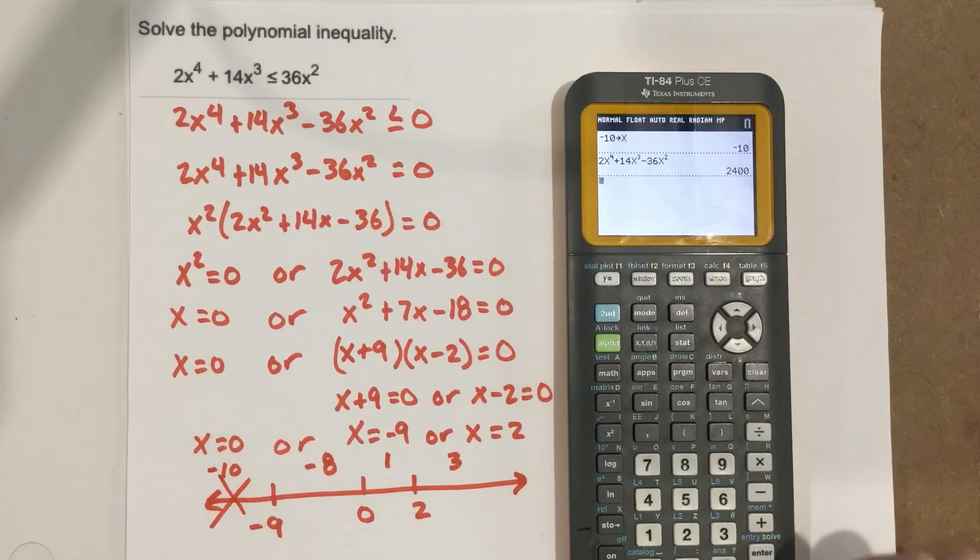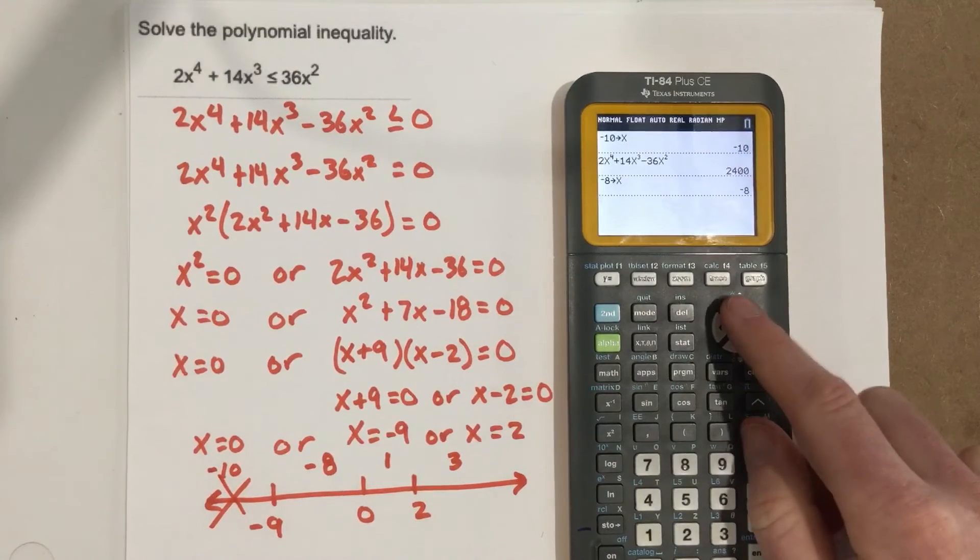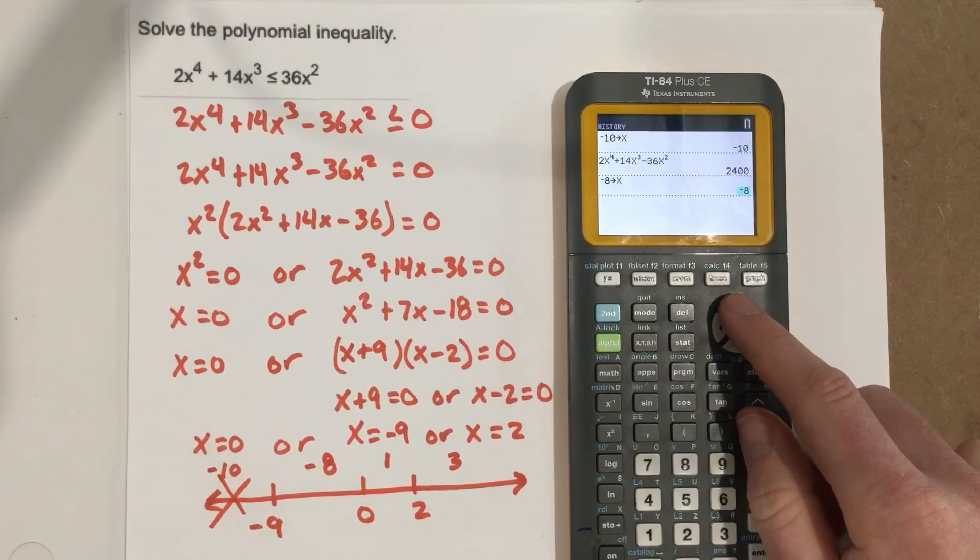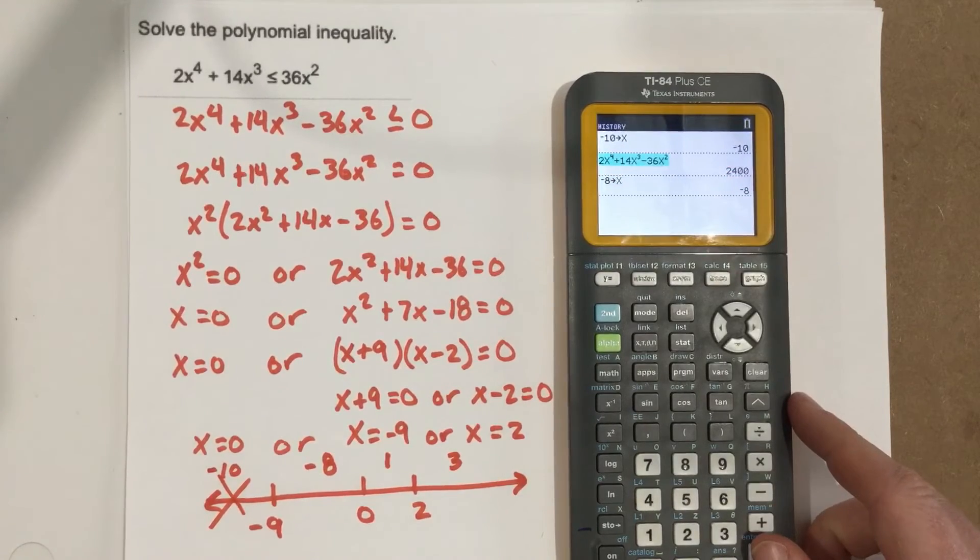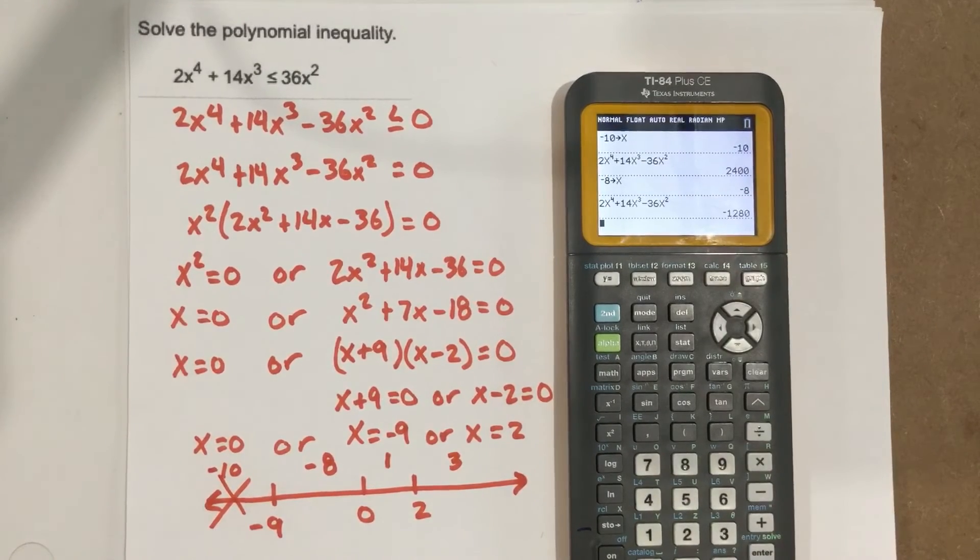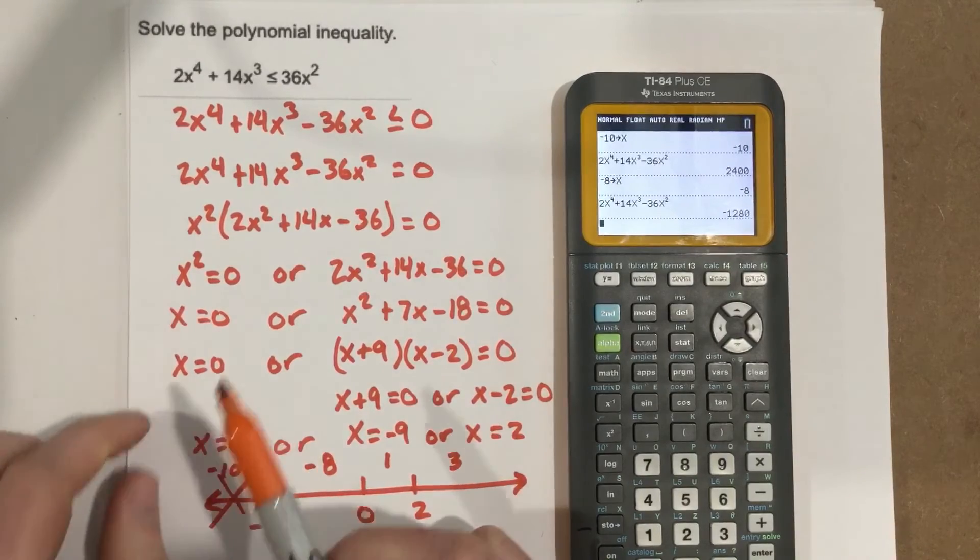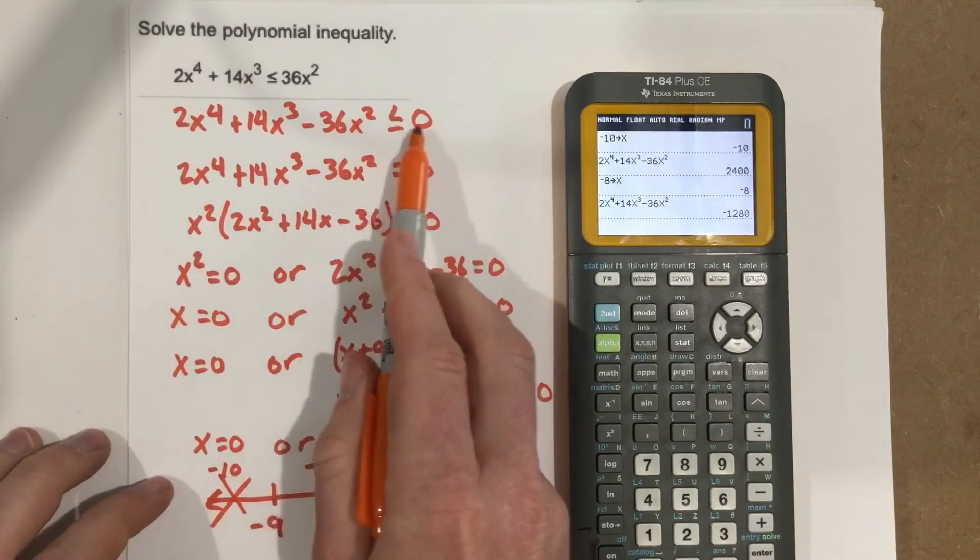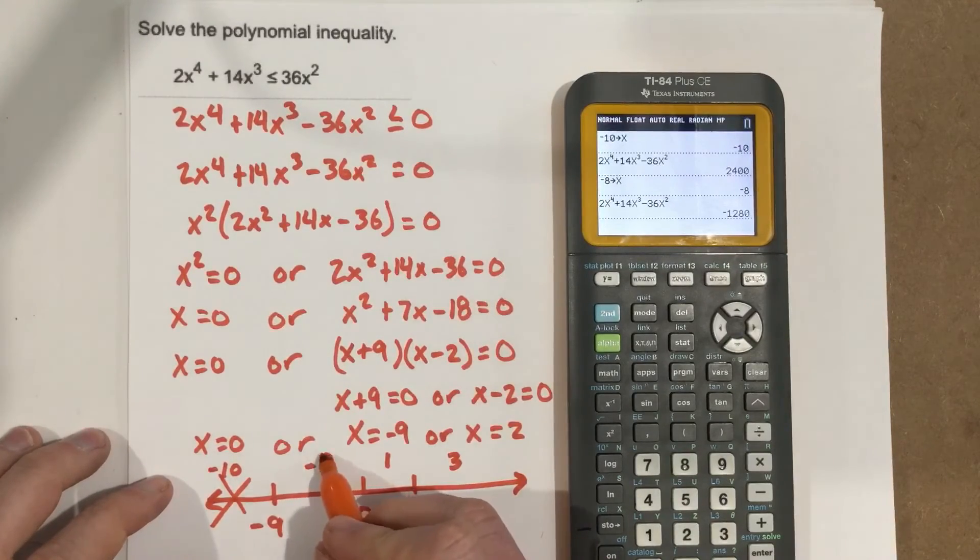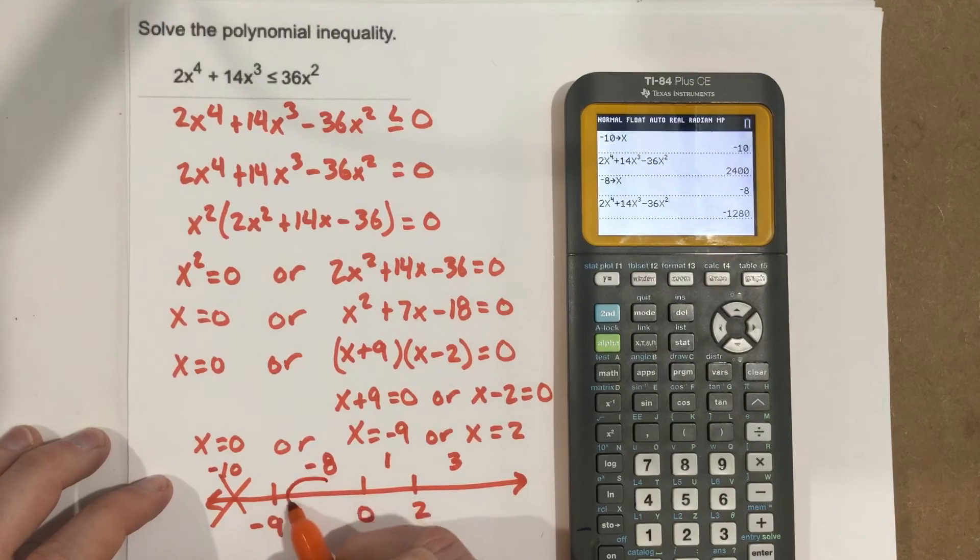So now I can store negative 8 as x. I can then go up, grab this function. And that gives me negative 1280. So negative 1280 is obviously less than 0. So my solutions, some of them occur right in here.